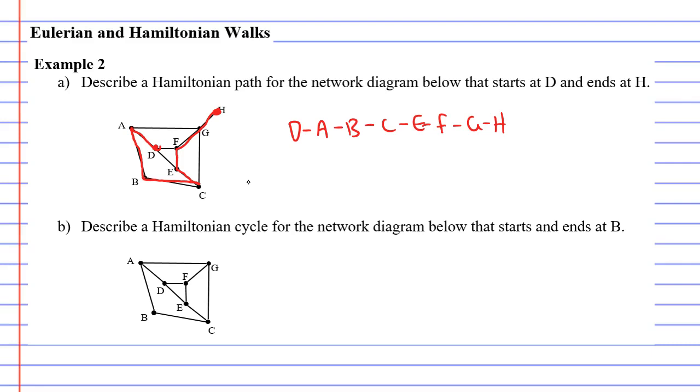Now, looking at question B, which is a Hamiltonian cycle, this time we need to start and end at vertex B. Remembering a Hamiltonian cycle starts and ends at the same vertex. So I'm going to go from B to C to E to D to F to G to A and finally back to B. So that works out nicely.